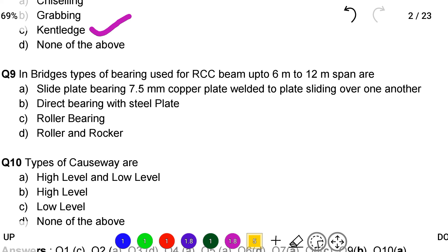Next question: in bridges, types of bearing used for RCC beam up to 6m to 12m span are option A slide plate bearing 7.5mm copper plate welded to the plate sliding over one another, option B direct bearing with steel plate, option C roller bearing,